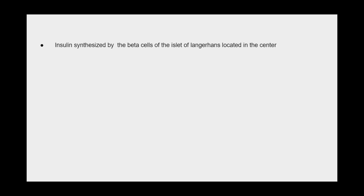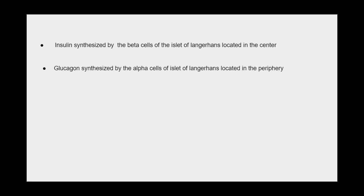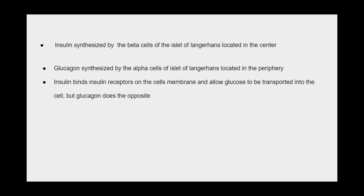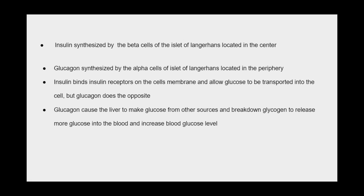Insulin is synthesized by the beta cells of the islets of Langerhans, located in the center, while glucagon is synthesized by the alpha cells, located in the periphery. Insulin binds insulin receptors on the cell membrane and allows glucose to be transported into the cell. Glucagon does the opposite — it causes the liver to make glucose from other sources and breaks down glycogen to release more glucose into the blood, increasing blood glucose level.